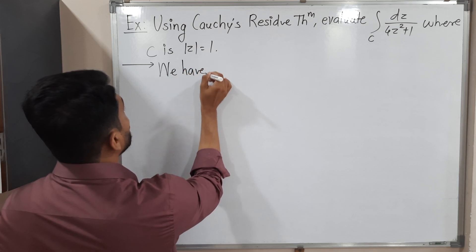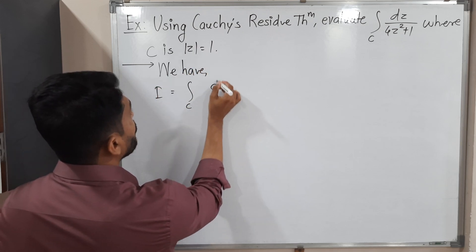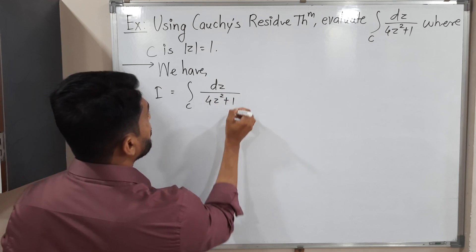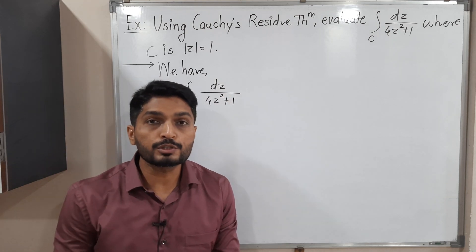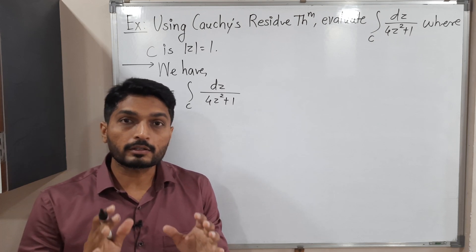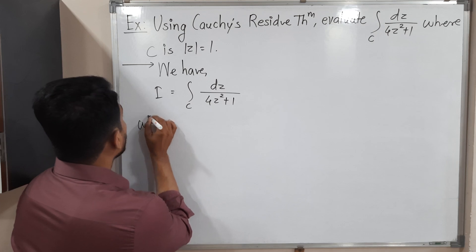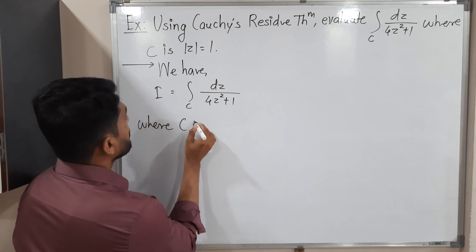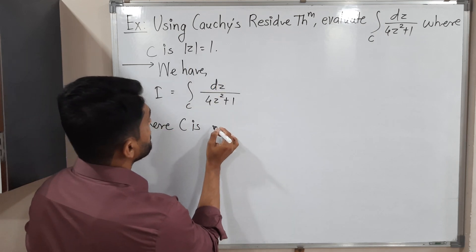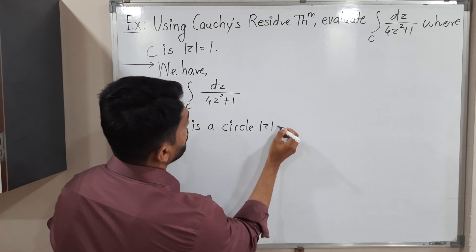We have I equal to the integration over C of dz upon 4z squared plus 1. So we give the most importance to that curve C. Let us draw that curve C first and then we will solve the problem. C is a circle — mod z is equal to 1.